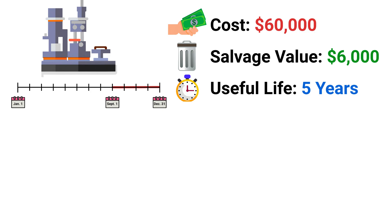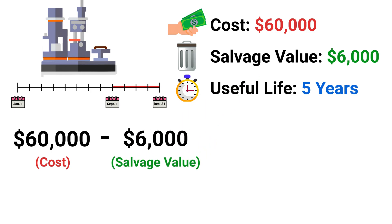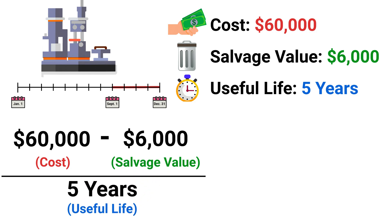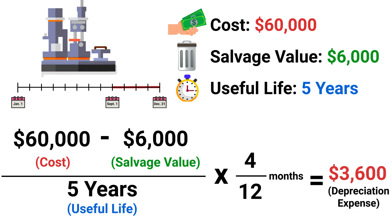If we are using the straight-line method, we take the machine's $60,000 cost, subtract the estimated salvage value of $6,000, and divide that amount by the useful life of five years. Next, we multiply that amount by four over 12 months, because of the four months of depreciation in the year. This gets us $3,600 of depreciation for the first year.